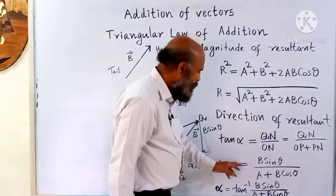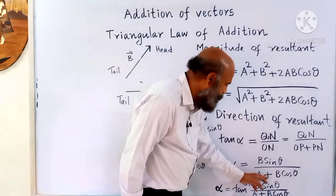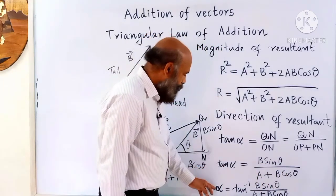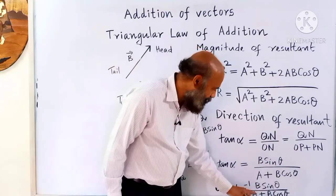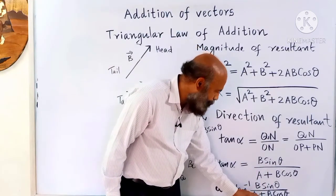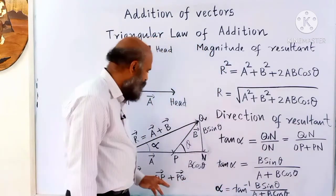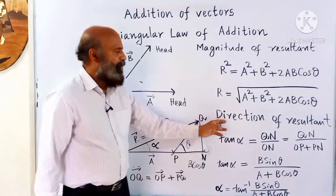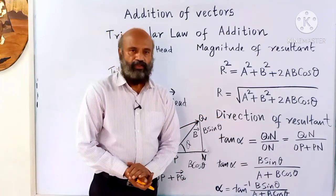So tan alpha equals b sin theta divided by (a plus b cos theta), and therefore alpha equals tan inverse of (b sin theta divided by a plus b cos theta). From this we can find alpha and hence the direction of the resultant. Thank you for watching.